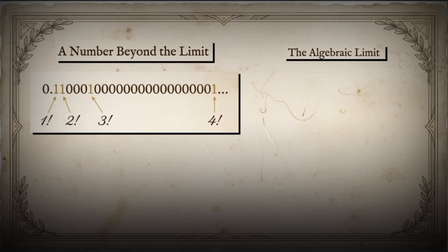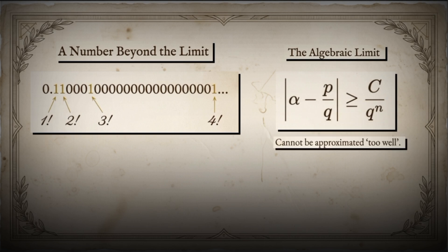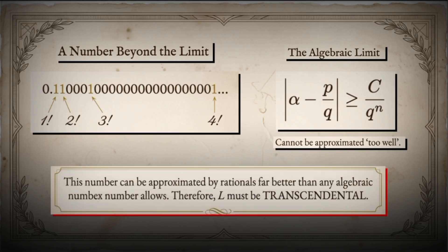Here's the key difference. Algebraic numbers cannot be approximated too well. They must satisfy the inequality. Absolute value of alpha minus p over q is greater than or equal to c over q to the power n. But Liouville's number can be approximated extremely well. It violates this inequality completely. Therefore, L must be transcendental.